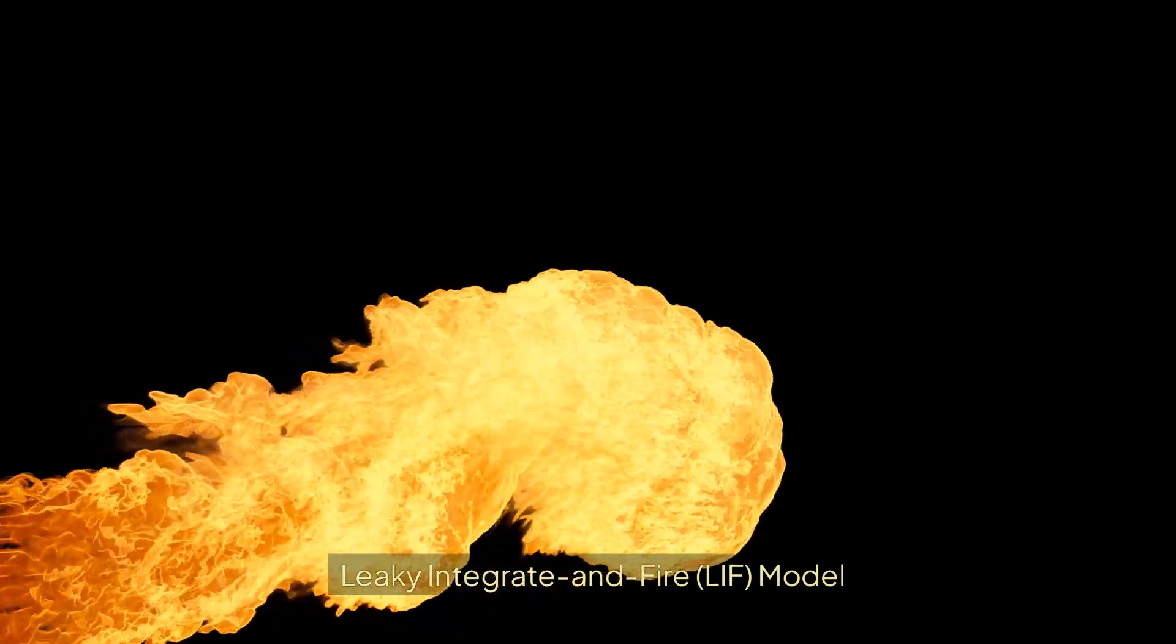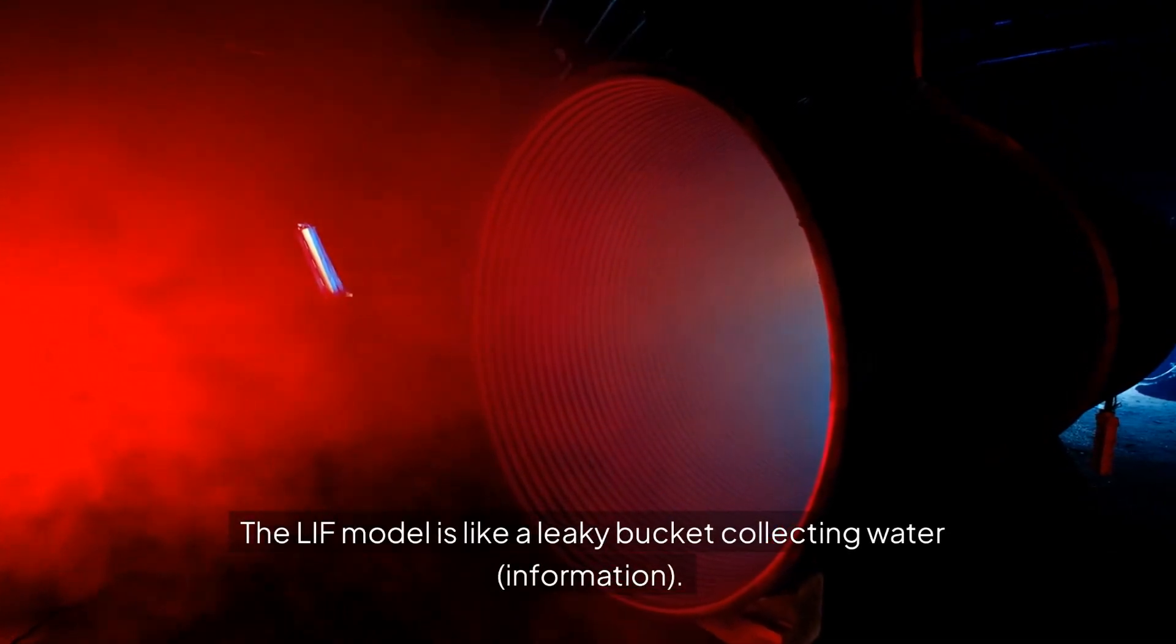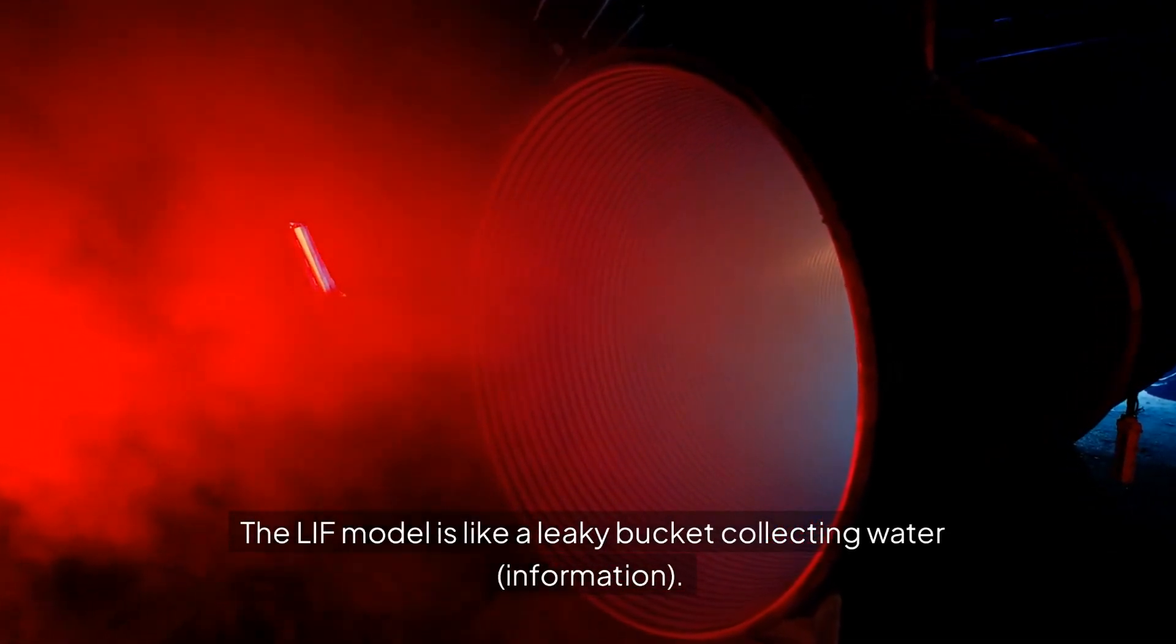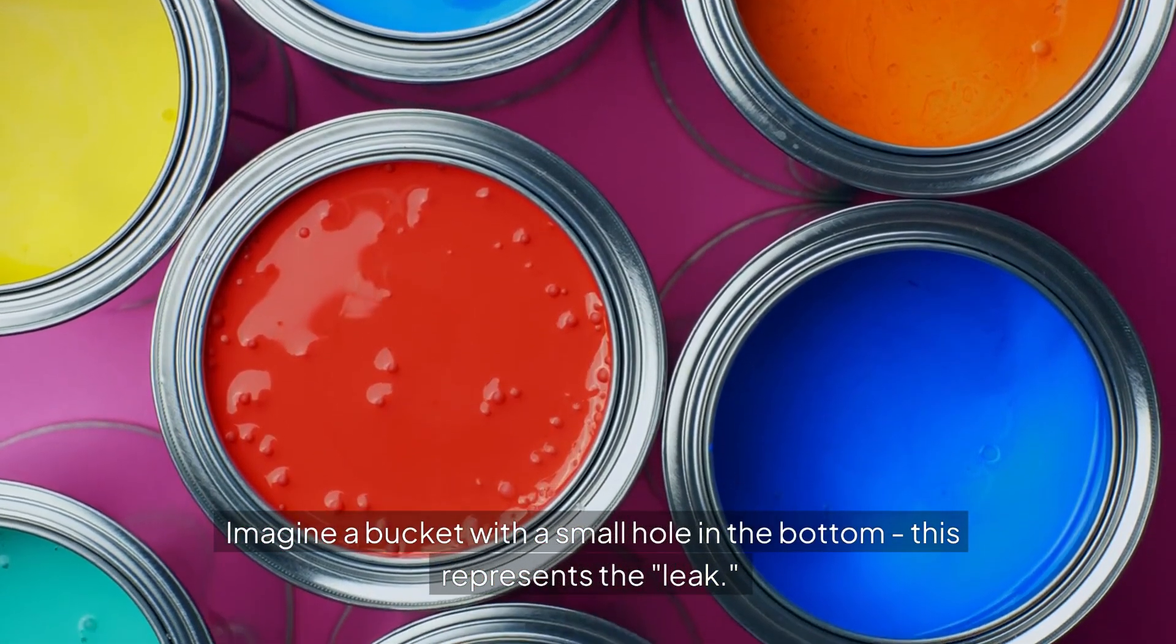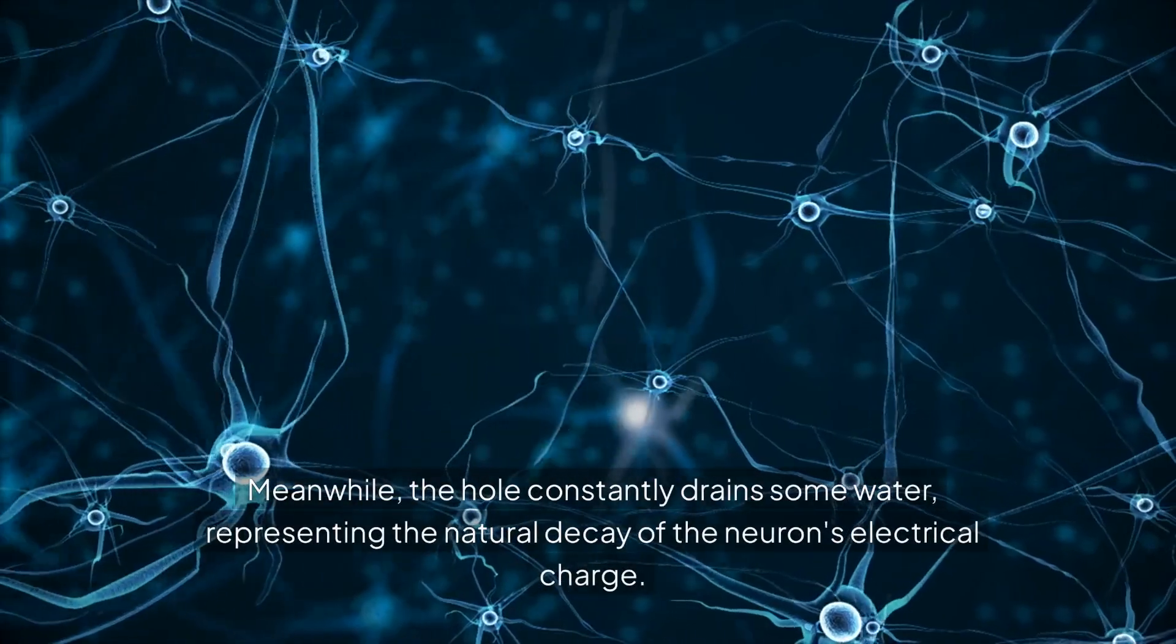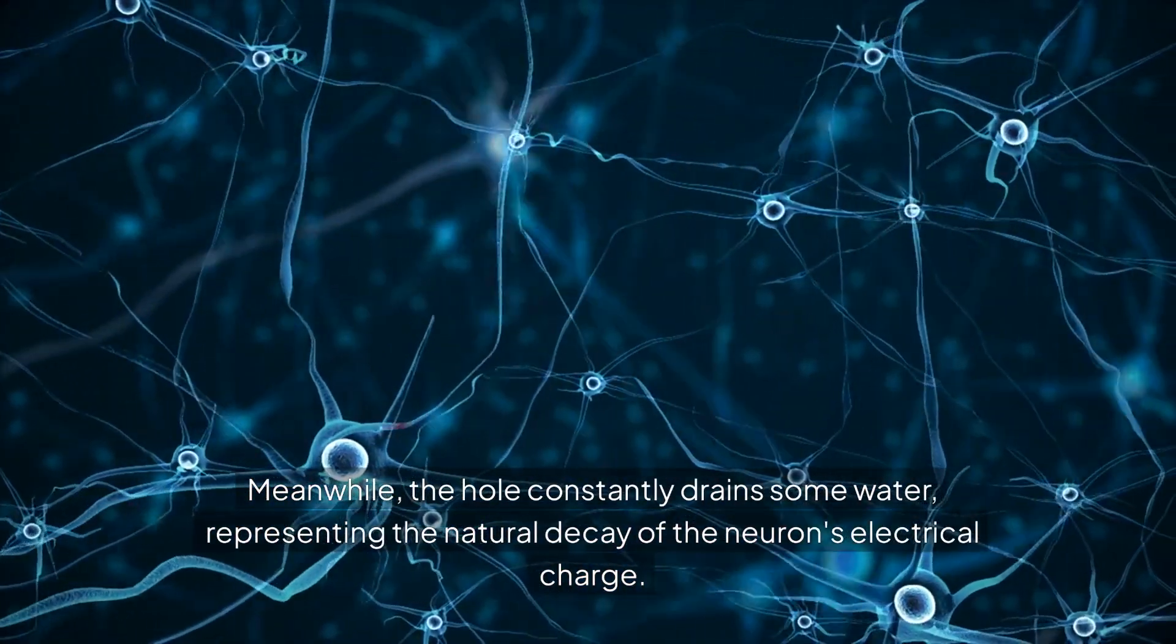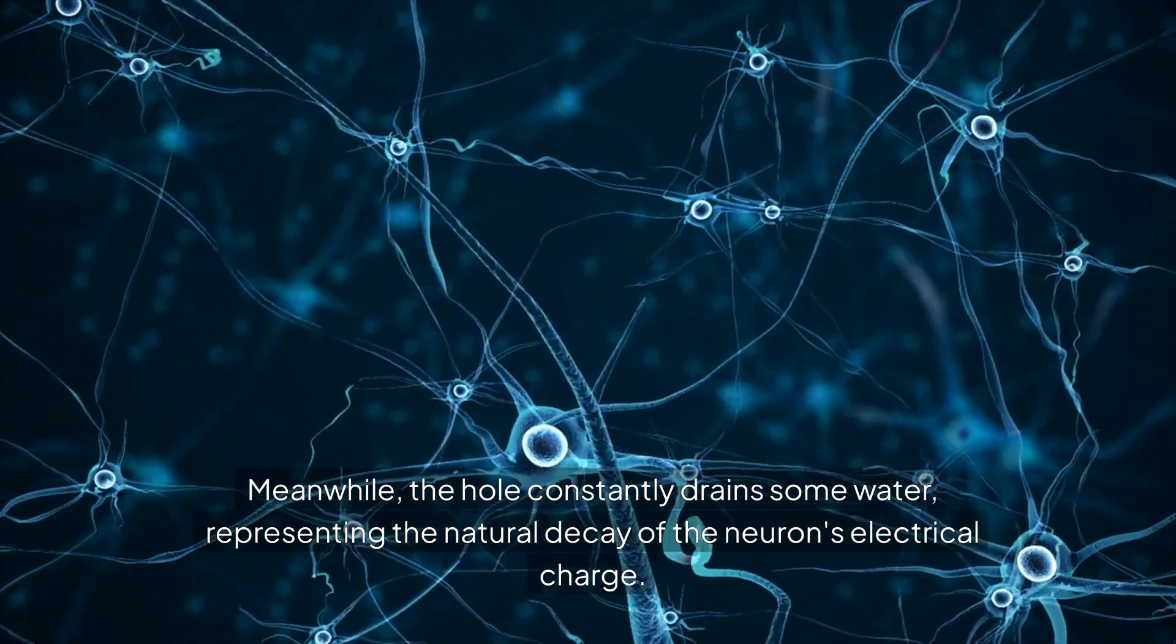Leaky integrate and fire (LIF) model. The LIF model is like a leaky bucket collecting water. Imagine a bucket with a small hole in the bottom—this represents the leak. As input signals arrive, they're like water being poured into the bucket. Meanwhile, the hole constantly drains some water, representing the natural decay of the neuron's electrical charge.